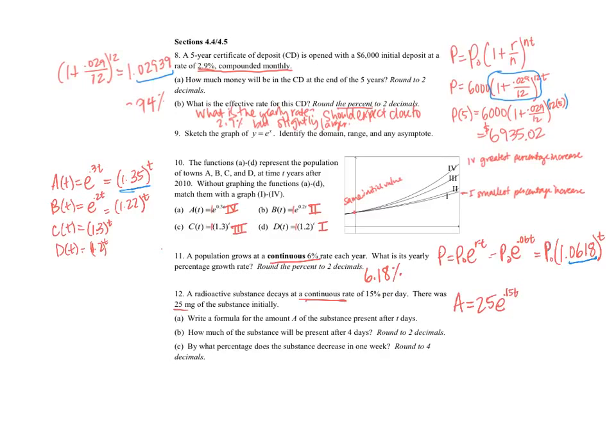How much of the substance will be present after 4 days? So 25, we'll do A of 4. Okay, let's plug that in. And again you have to be careful here and make sure that you have all of that in your parentheses so that when you compute it, it raises that 0.15 and the 4 both up in the exponent. So I got 45.55, and the units of that are milligrams.